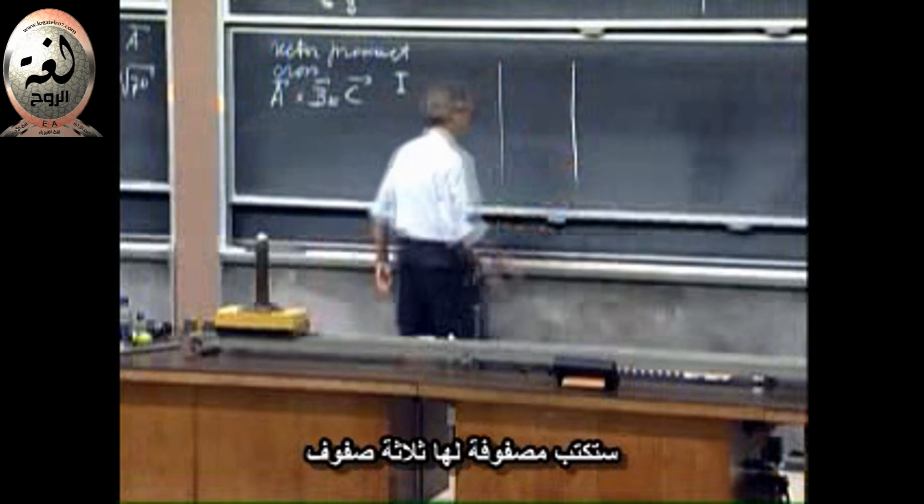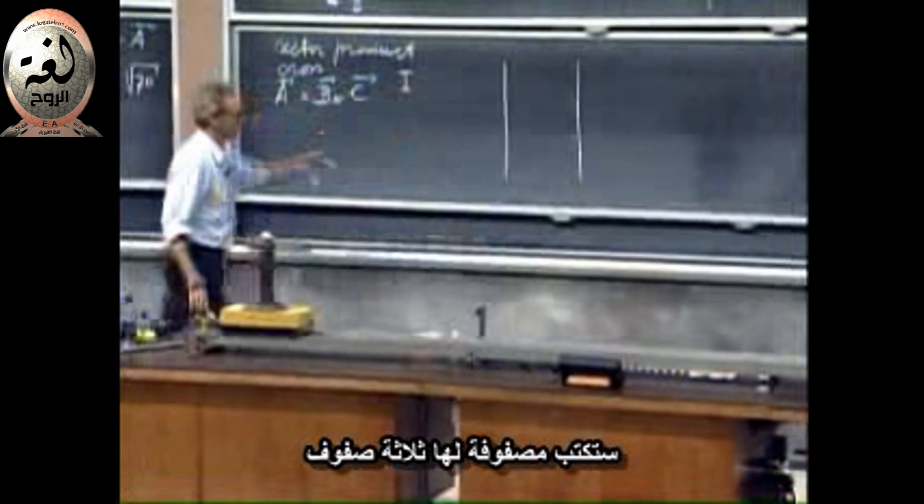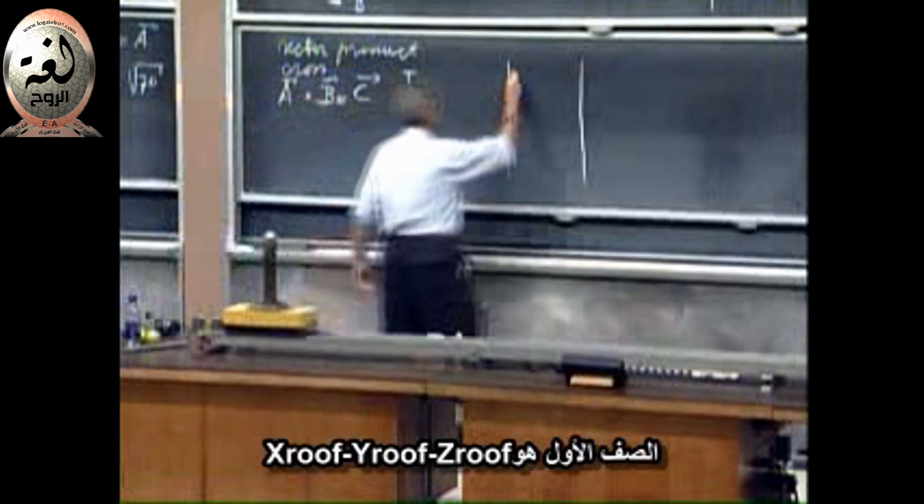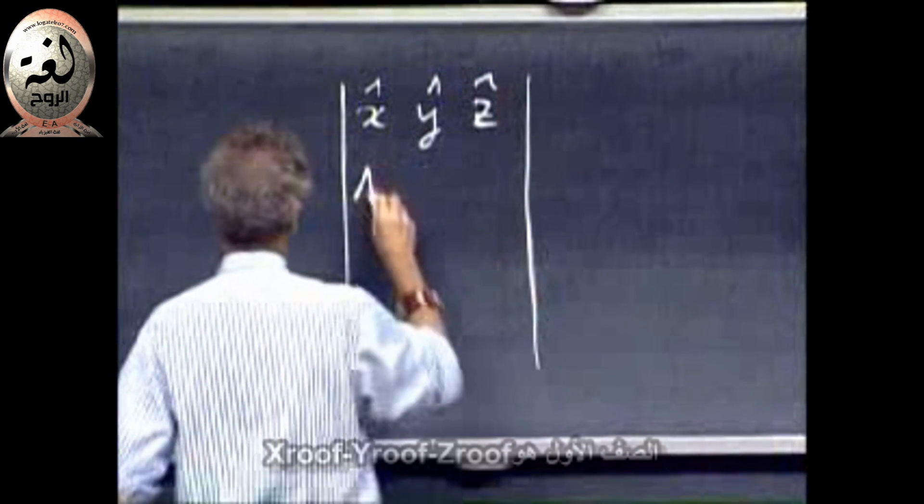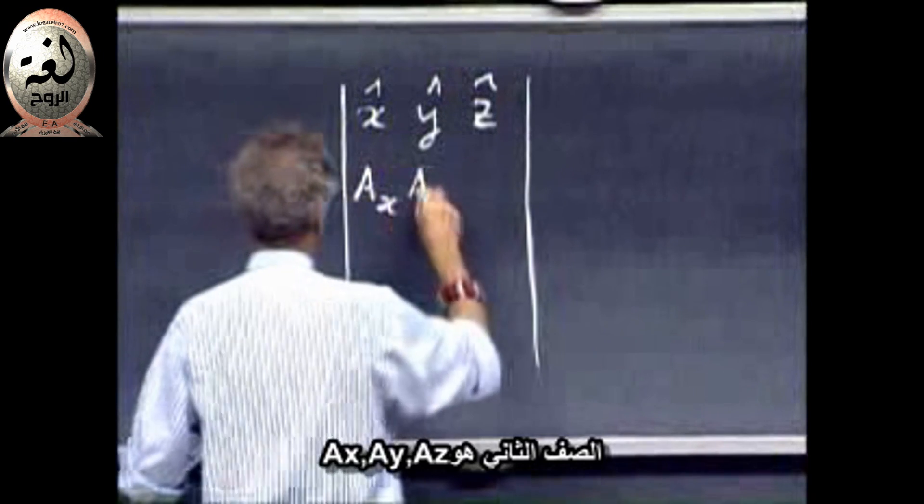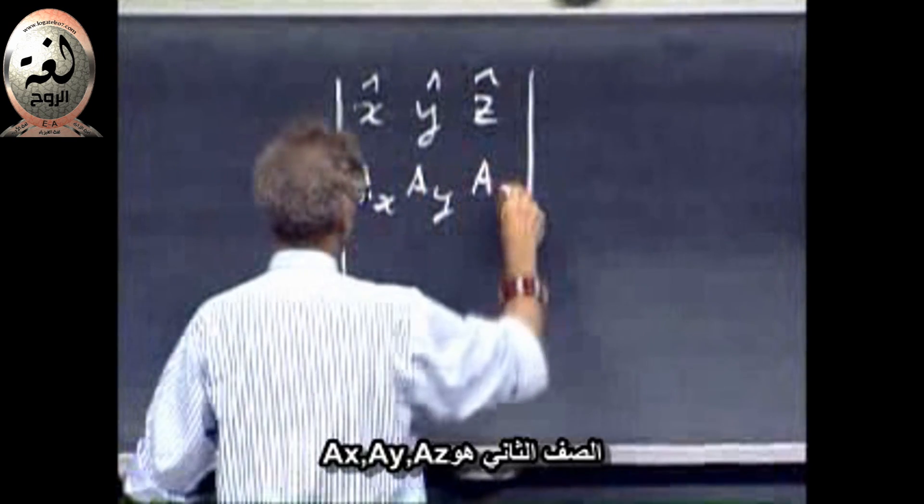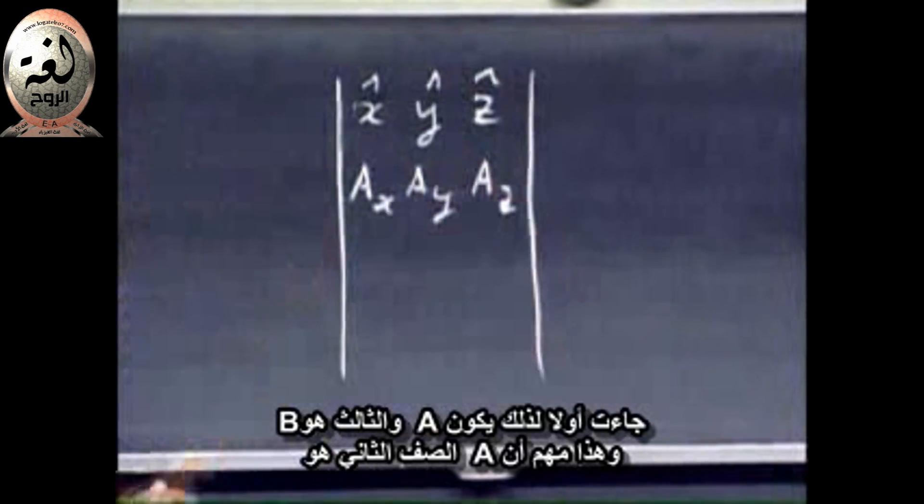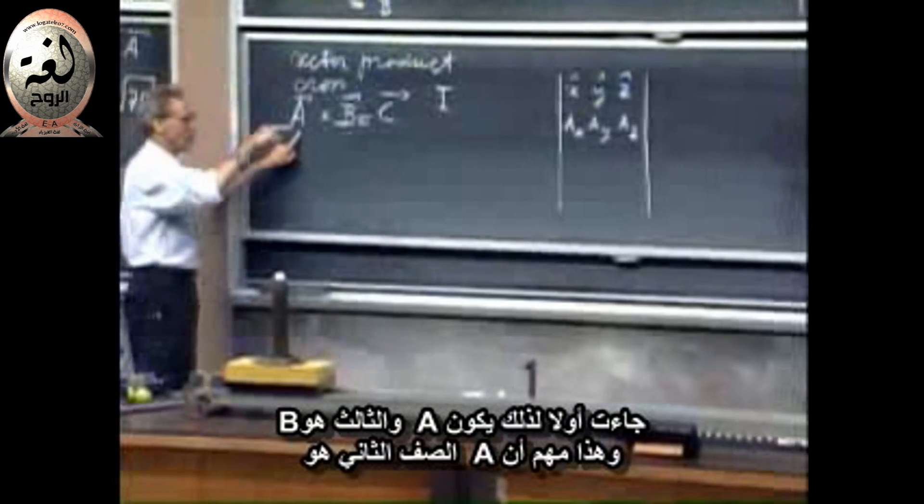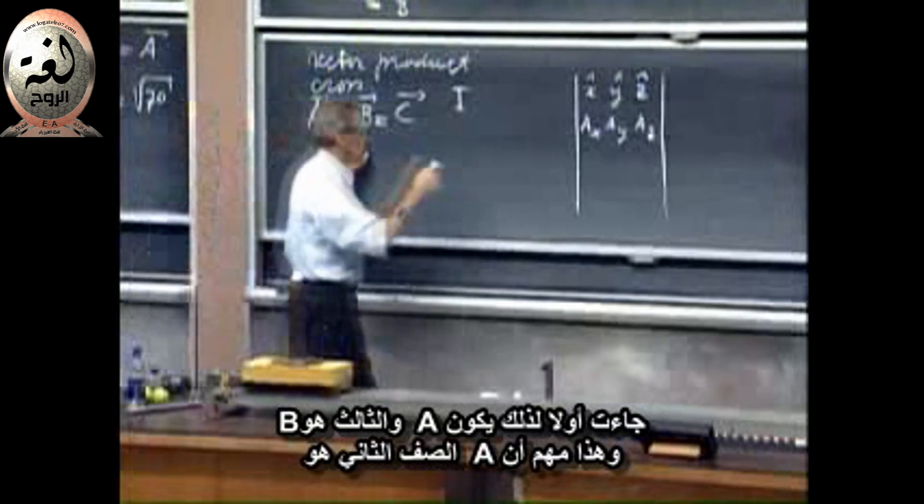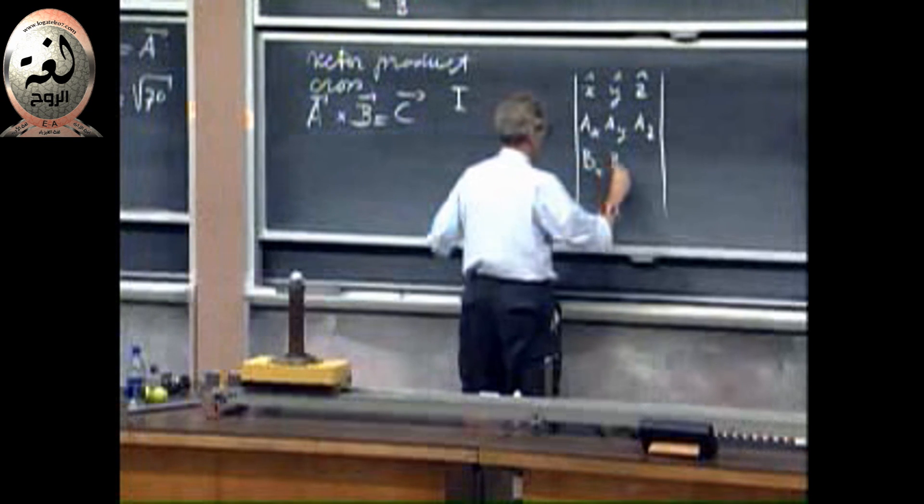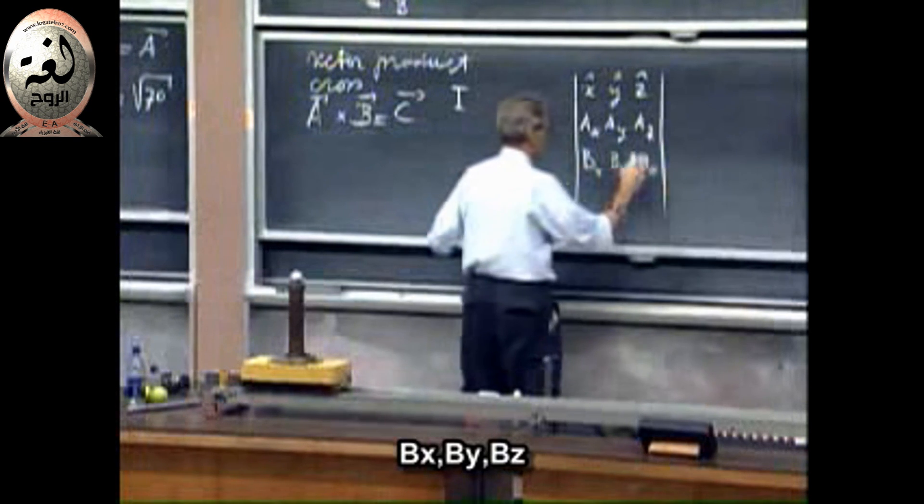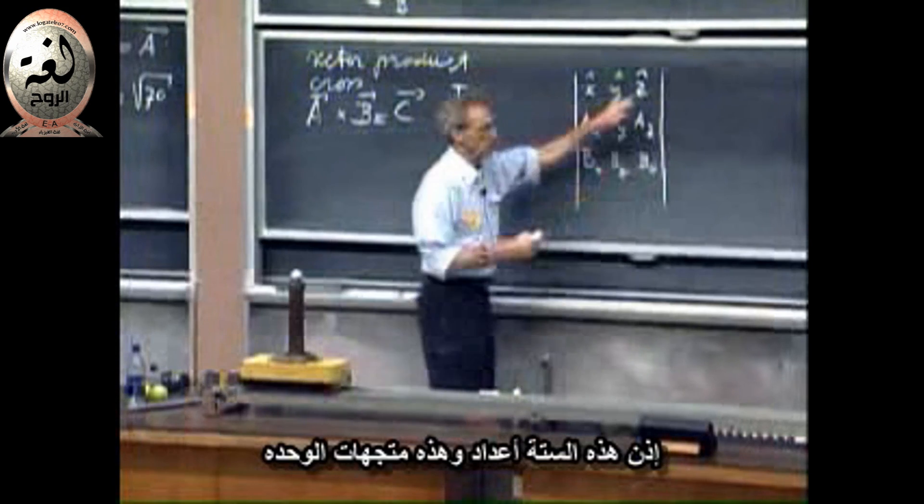You write down here a matrix with three rows. The first row is X roof, Y roof, Z roof. The second one is A of X, A of Y, A of Z. It's important if A is here first that that second row must be A, and the third row is then B: B of X, B of Y, B of Z. So these six are numbers, and these are the unit vectors.